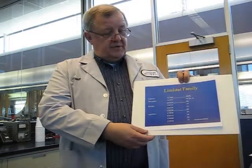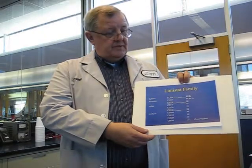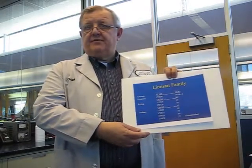We have a family of which we call Limistat here at American Roller that are electrically conductive materials and we have them in various hardnesses and polymers and connectivity ranges. Please contact your American Roller representative if you need to talk about those.